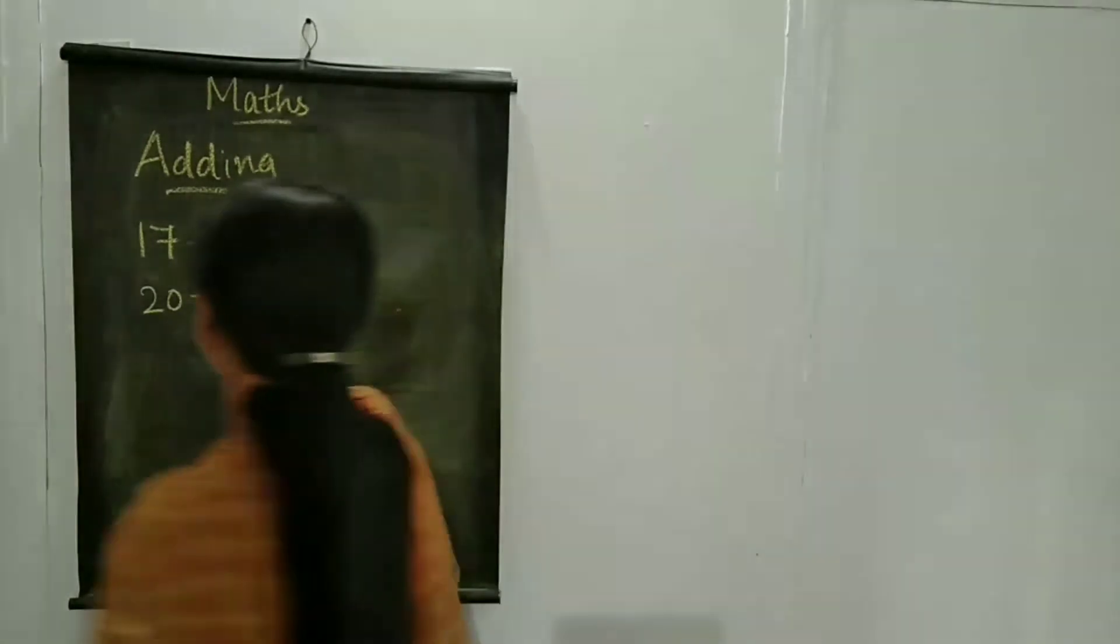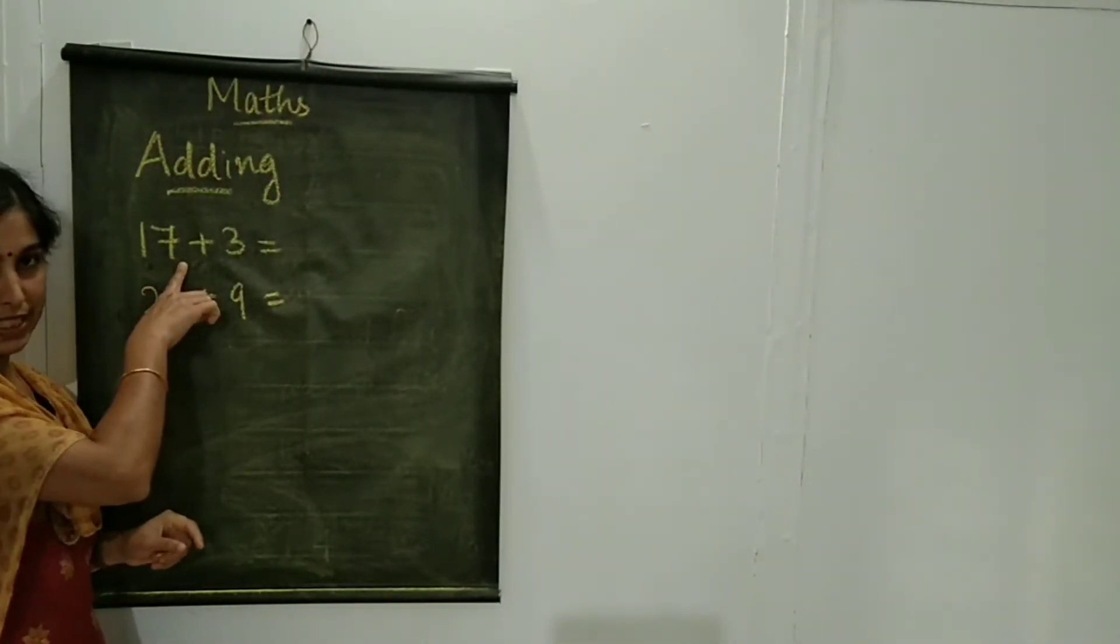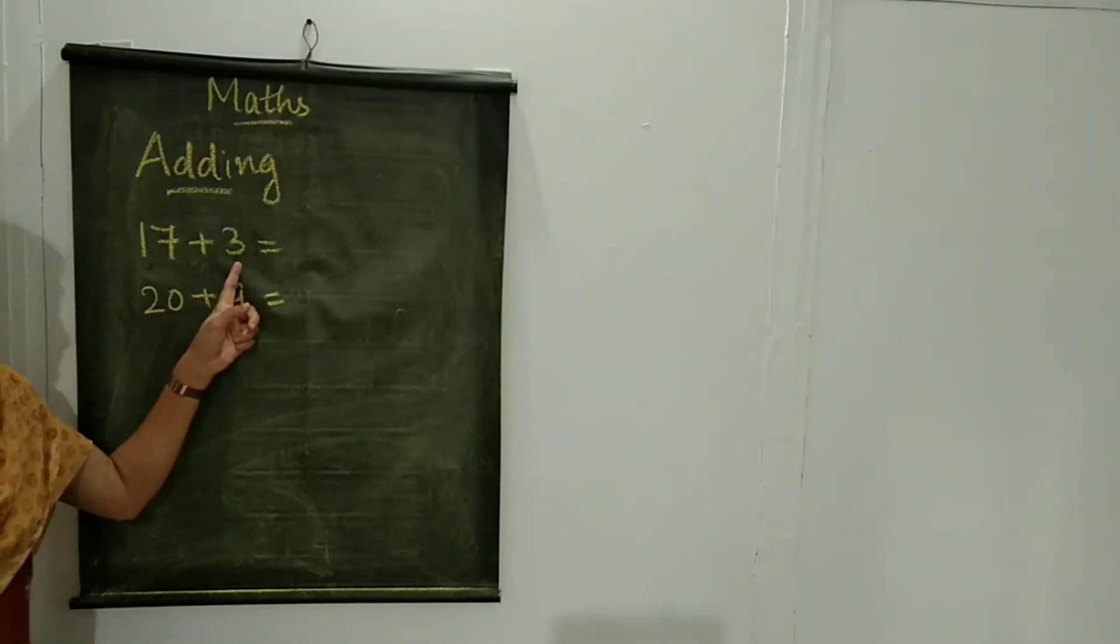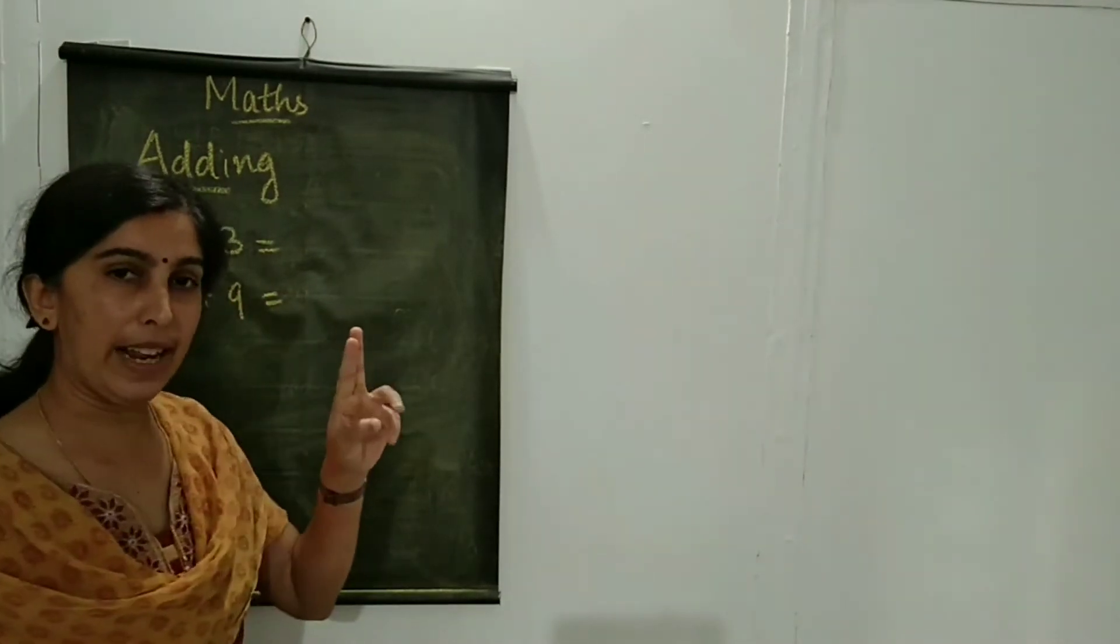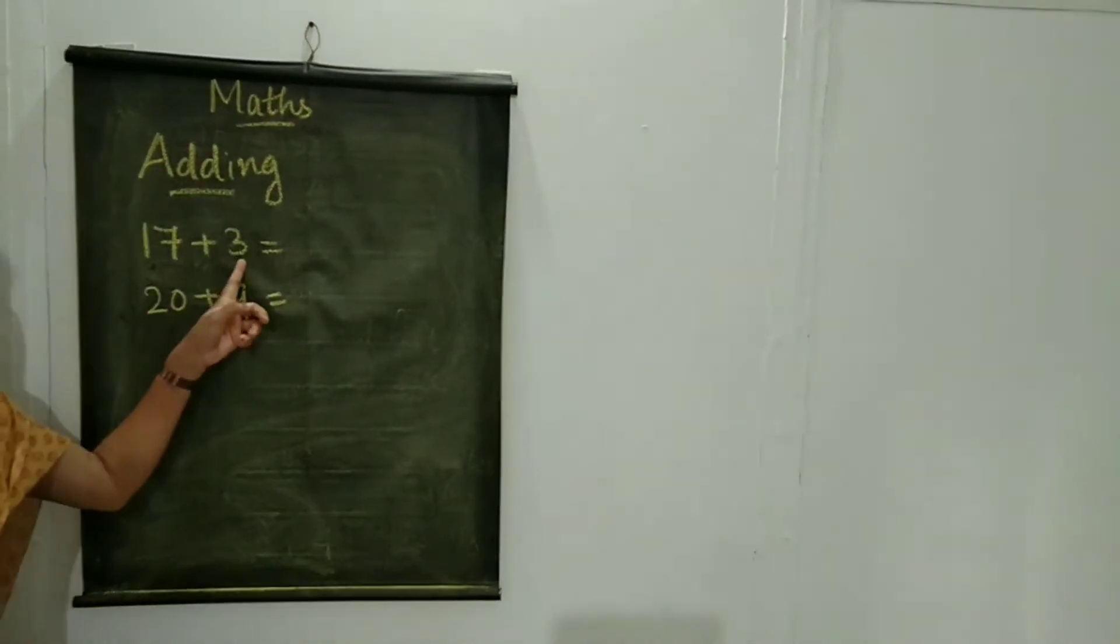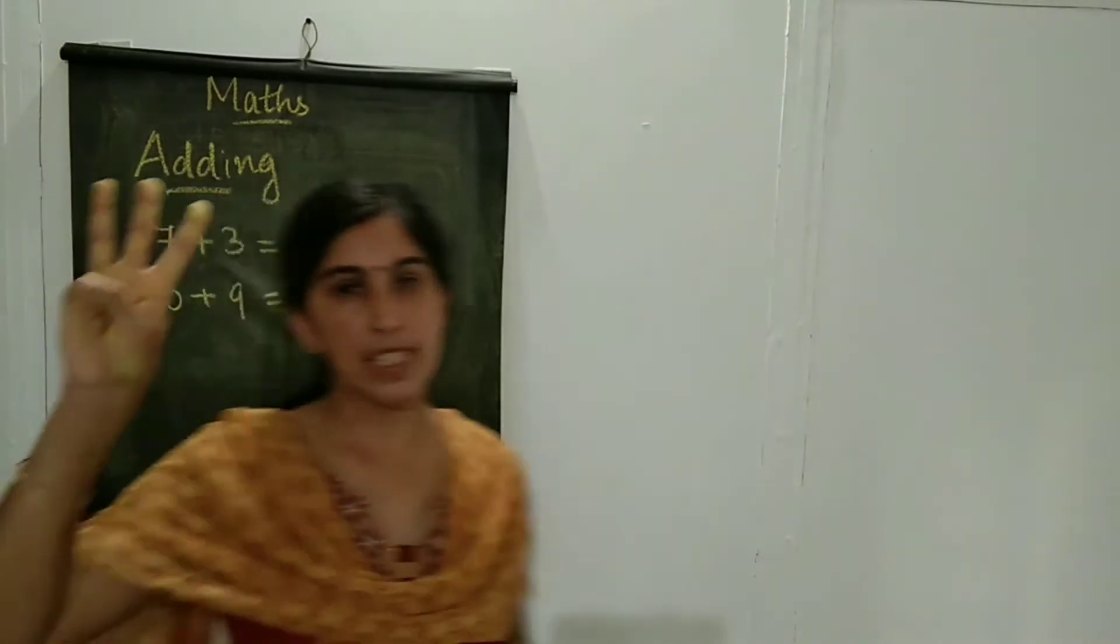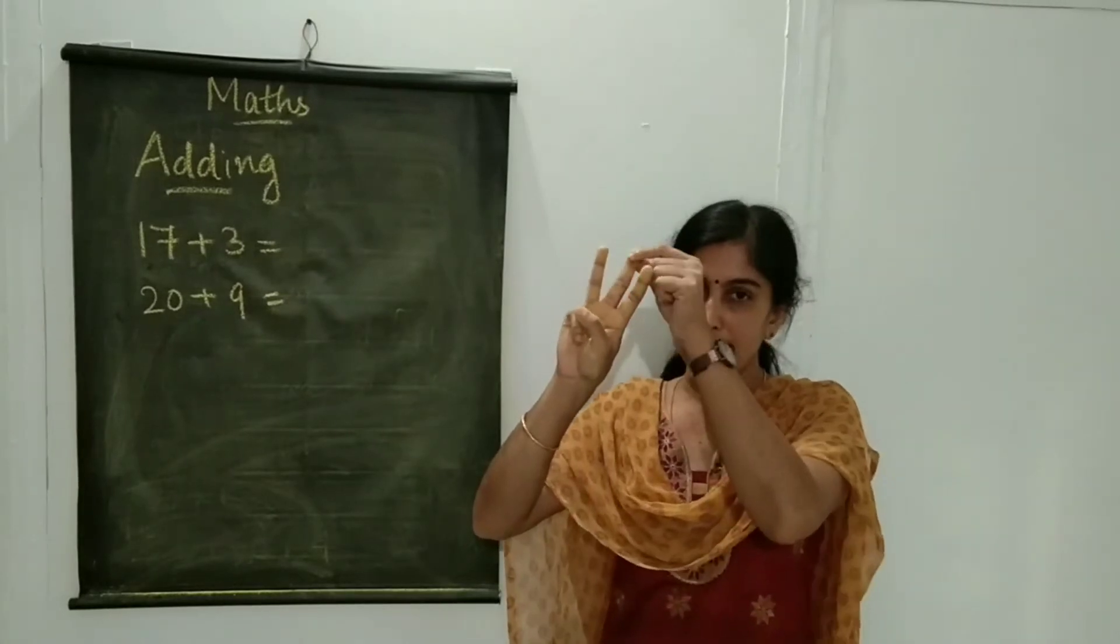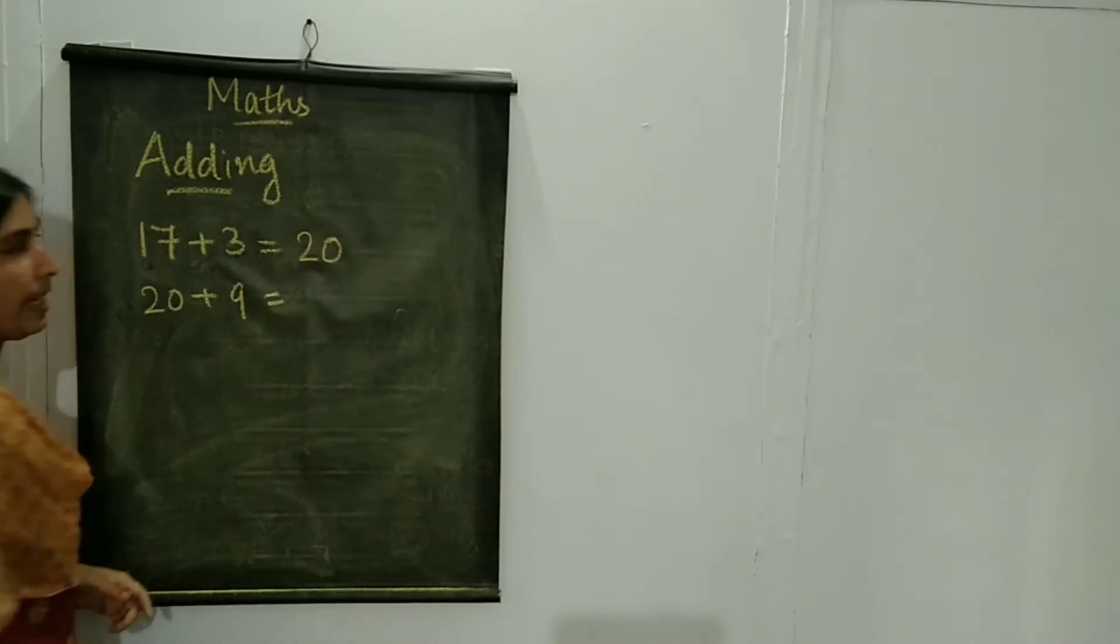Then look at here. This is a 2-digit number. 17 is a 2-digit number, plus 3. That is a 1-digit number. We are going to add a 2-digit number and a 1-digit number. 17 plus 3. You keep 17 aside and count: 18, 19, 20. So, 17 plus 3 is equal to 20.